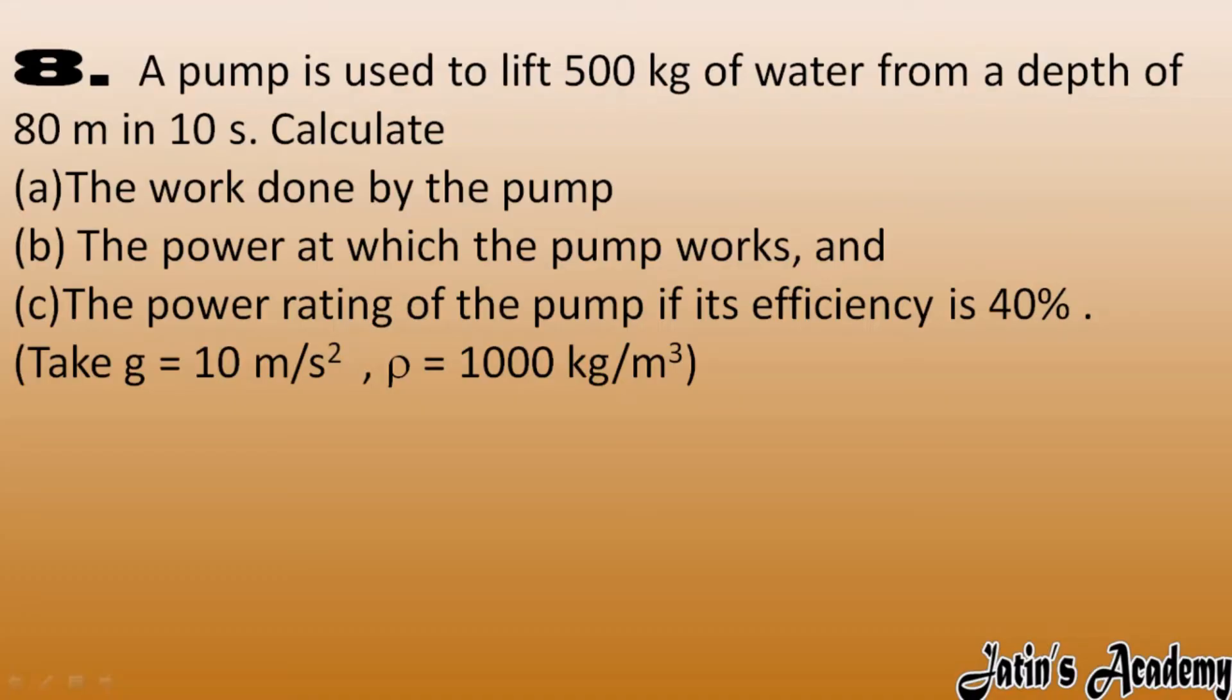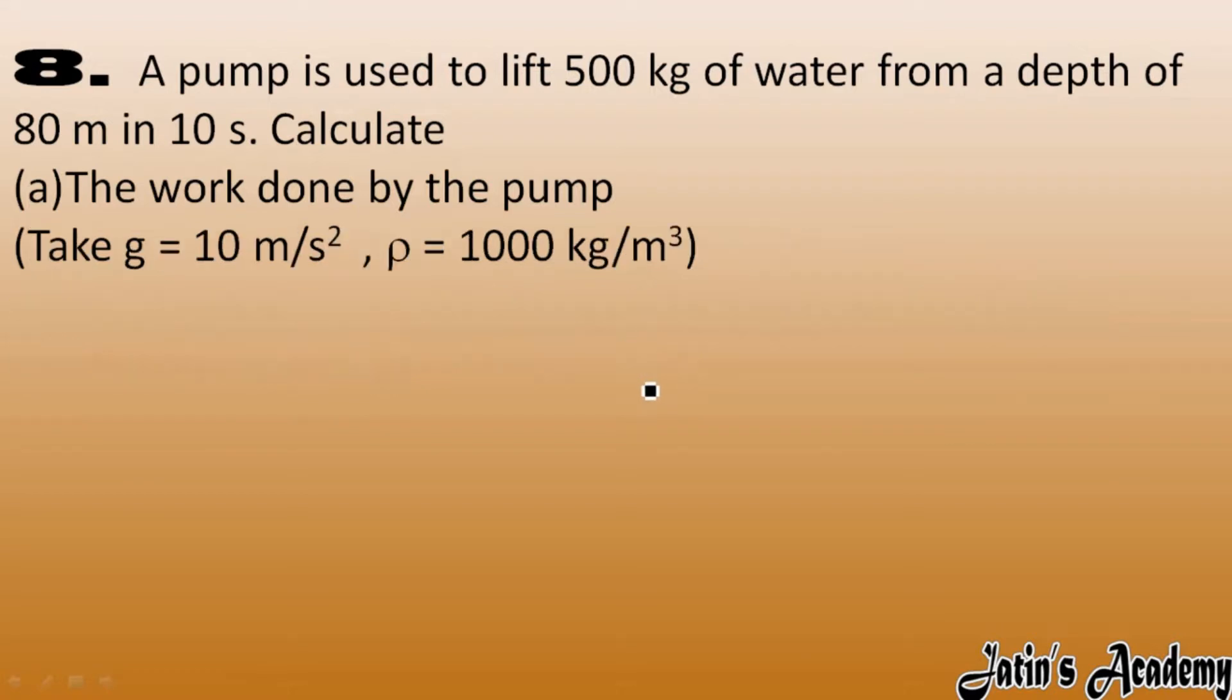Next question: A pump is used to lift 500 kg of water from a depth of 80 meter in 10 seconds. We have to calculate the work done by the pump, the power at which the pump works, and the power rating of the pump if its efficiency is 40 percent. g value is given as 10 meter per second square and density is given as thousand kilogram per meter cube.